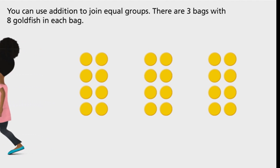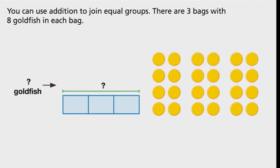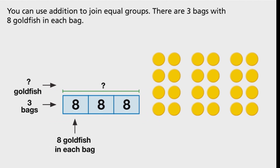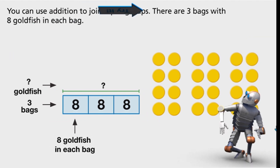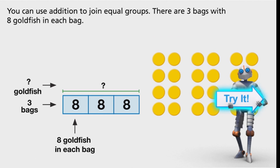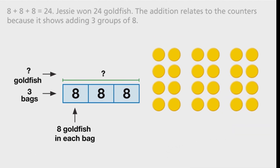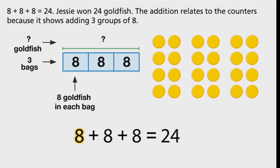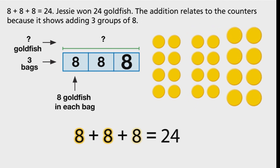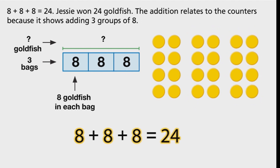You can use addition to join equal groups. There are three bags with eight goldfish in each bag. Eight plus eight plus eight equals 24. Jesse won 24 goldfish. The addition relates to the counters because it shows adding three groups of eight.